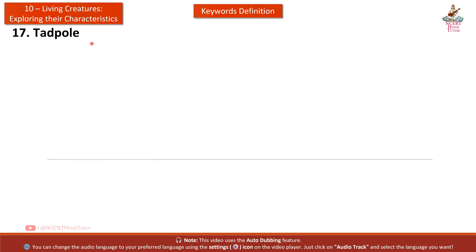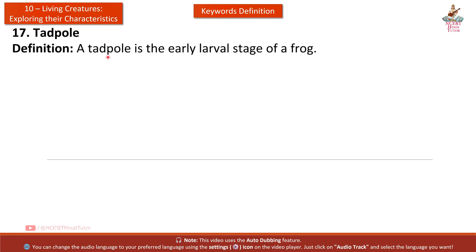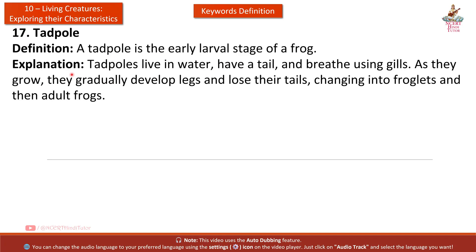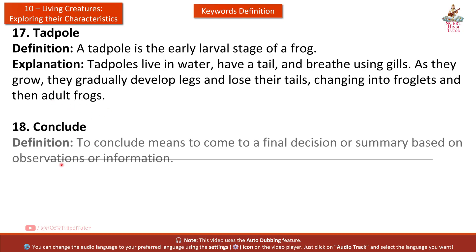Seventeenth: Tadpole. Definition: A tadpole is the early larval stage of a frog. Explanation: Tadpoles live in water, have a tail, and breathe using gills. As they grow, they gradually develop legs and lose their tails, changing into froglets and then adult frogs.